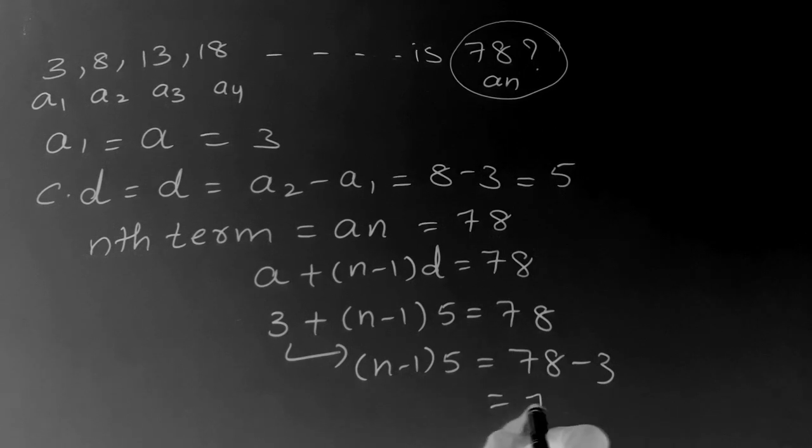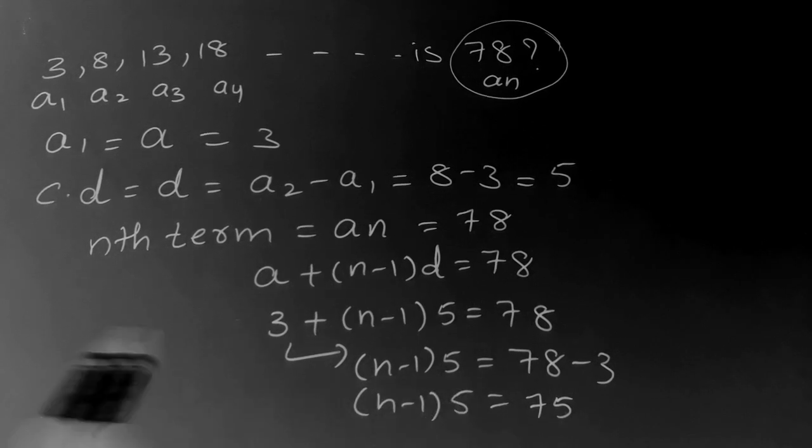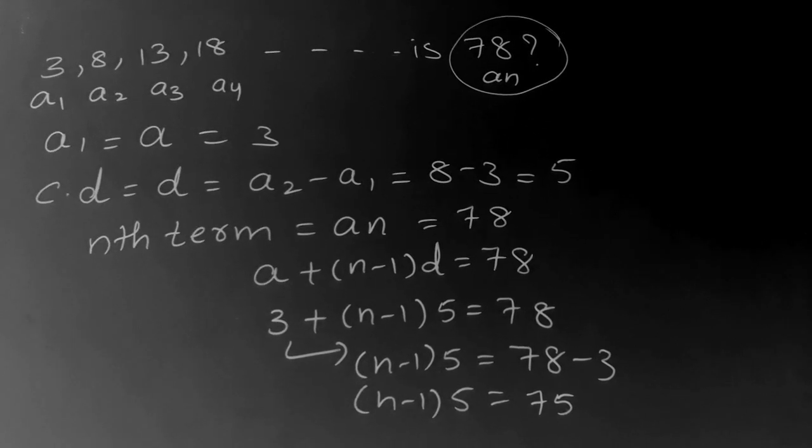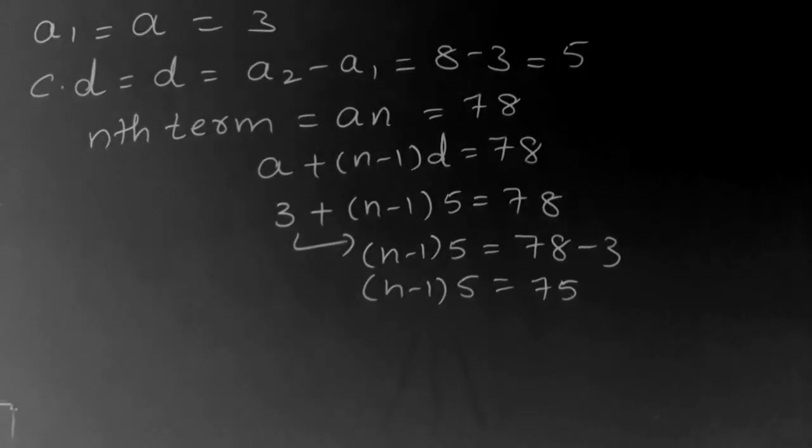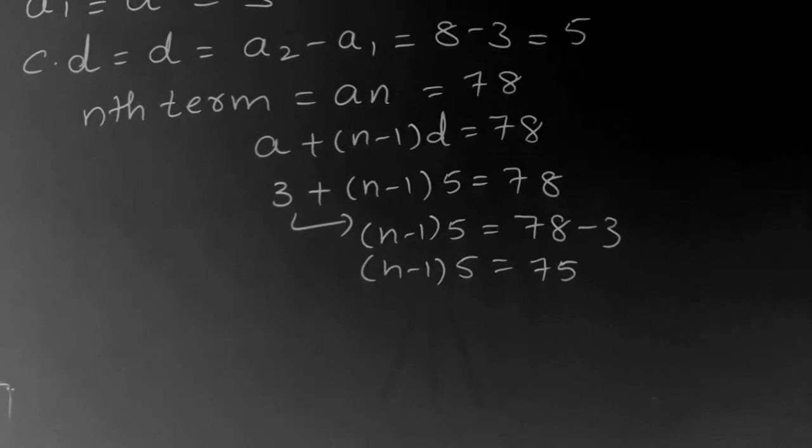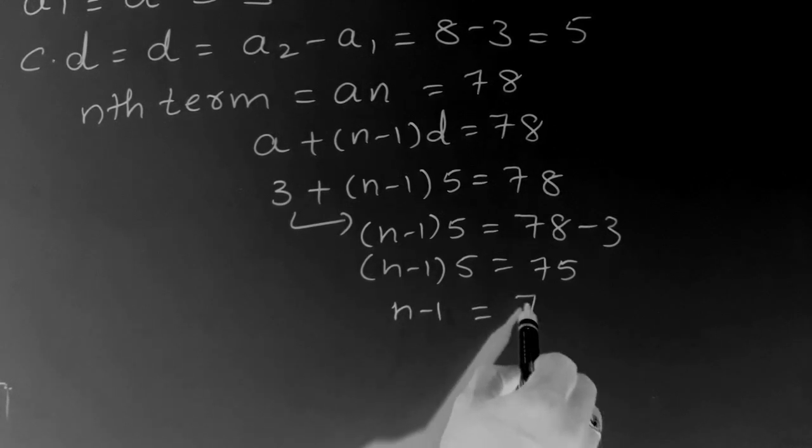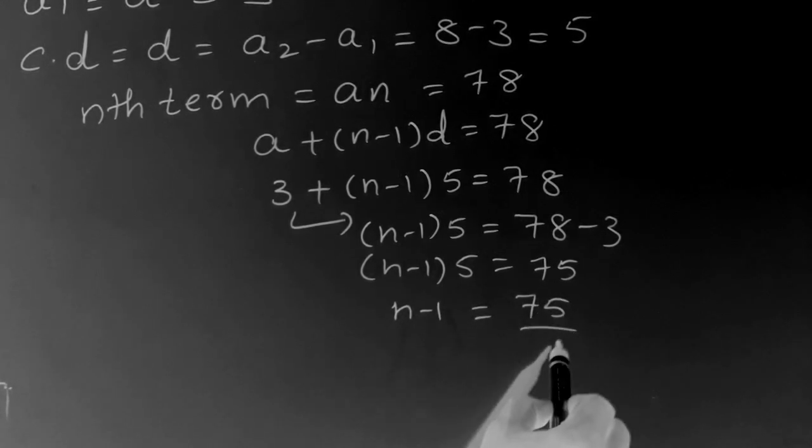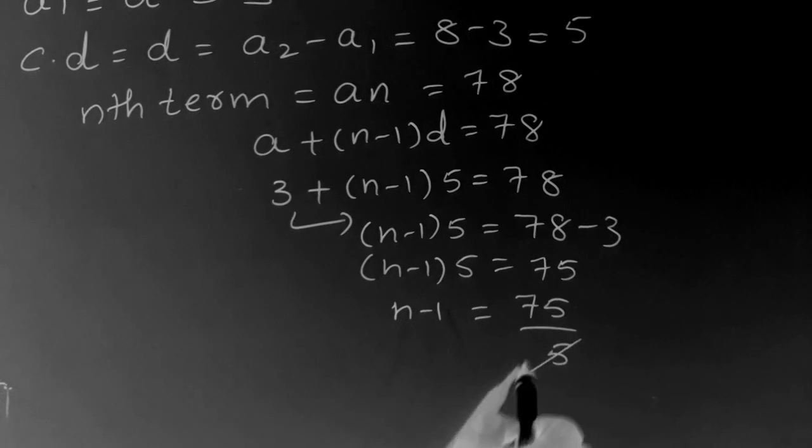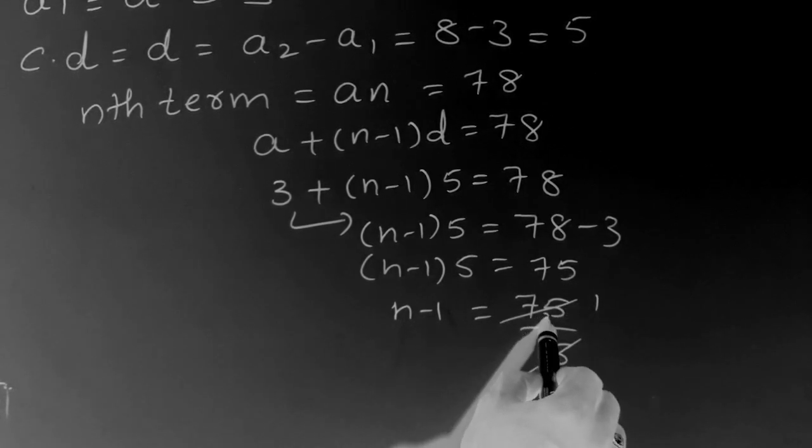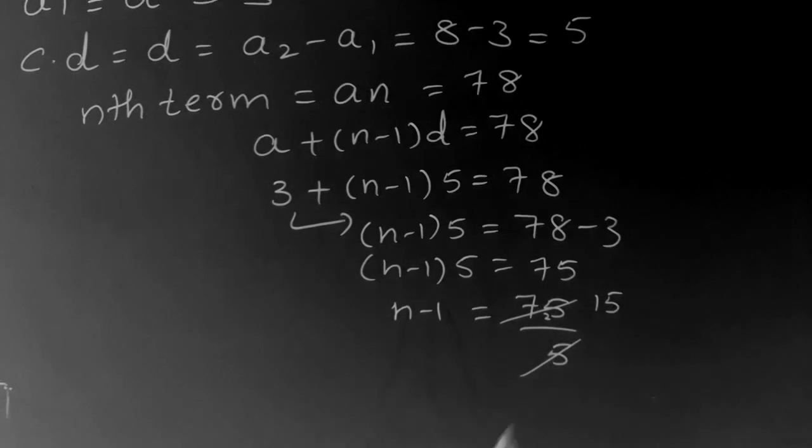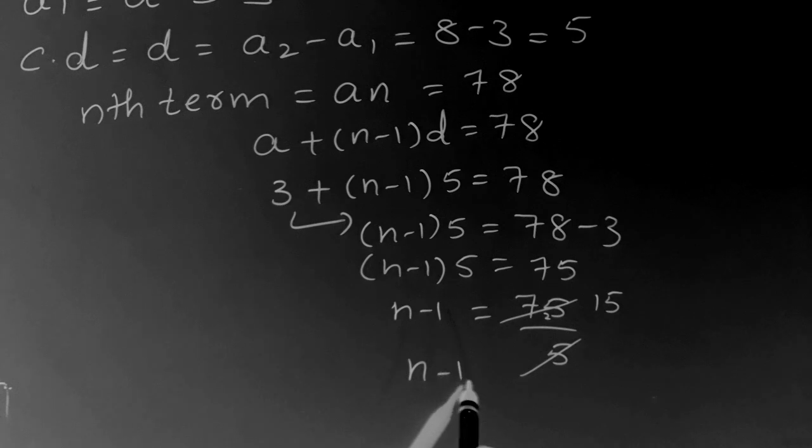So here (n-1) into 5. So 5, it is in multiplication, it goes to division. (n-1) is equal to 75 by 5. Here 5 into 15 is 75. So 15 we are getting. (n-1) is equal to 15.